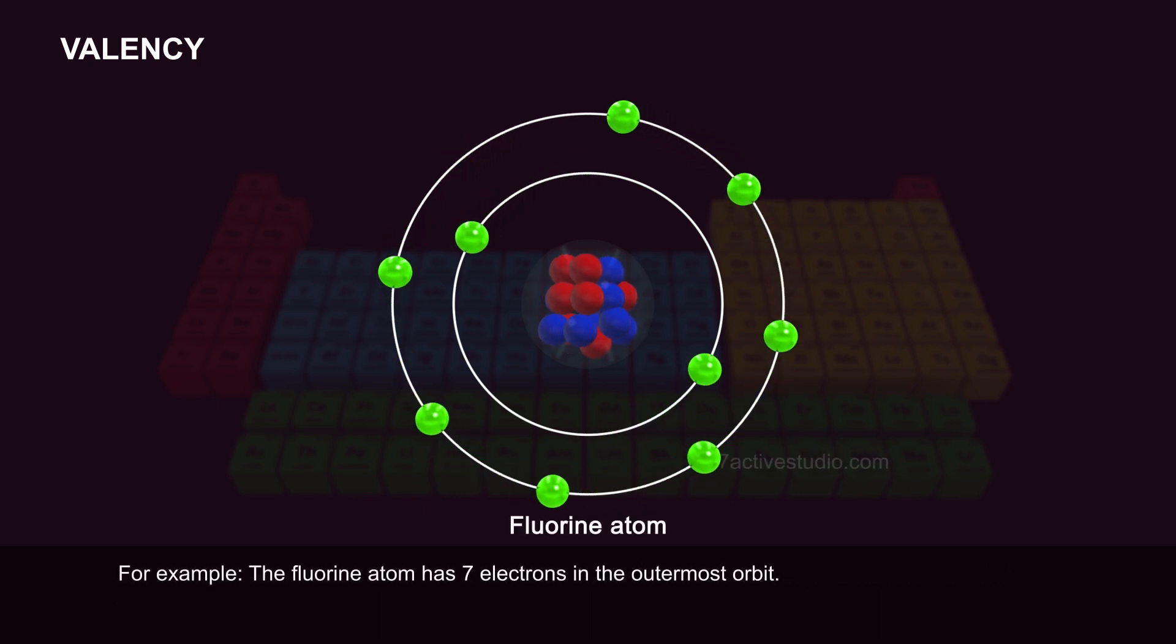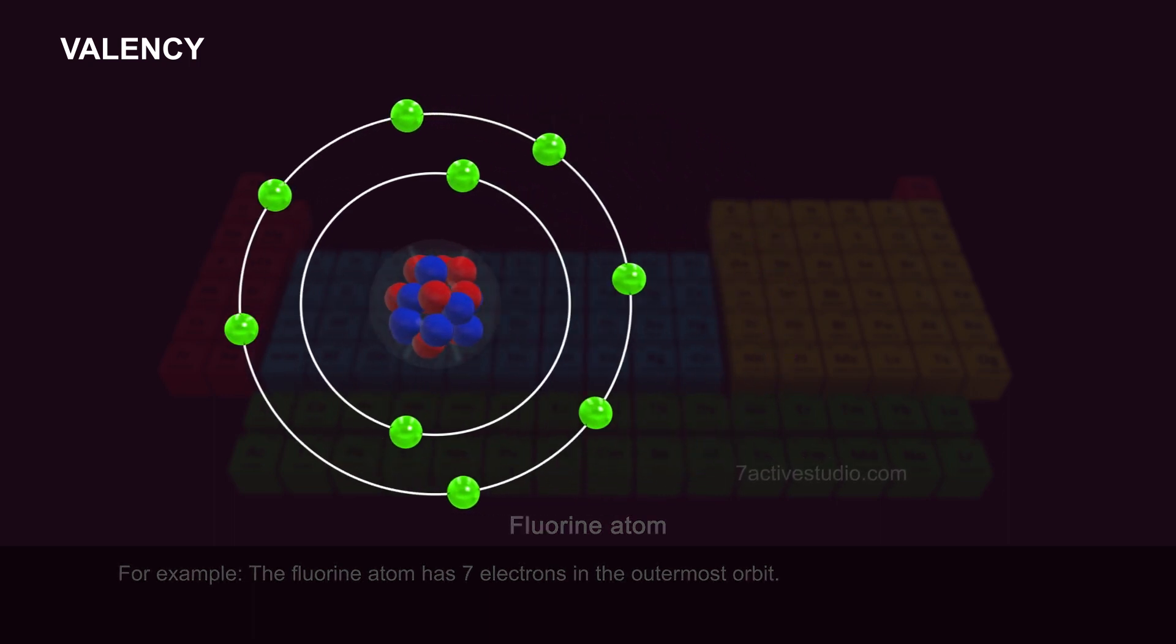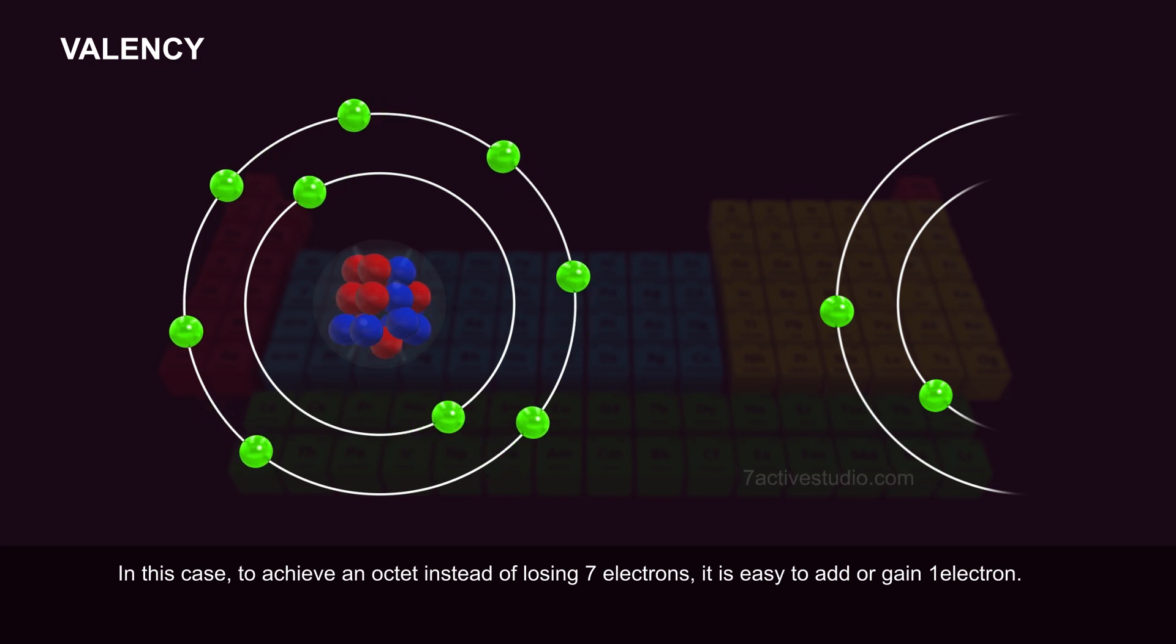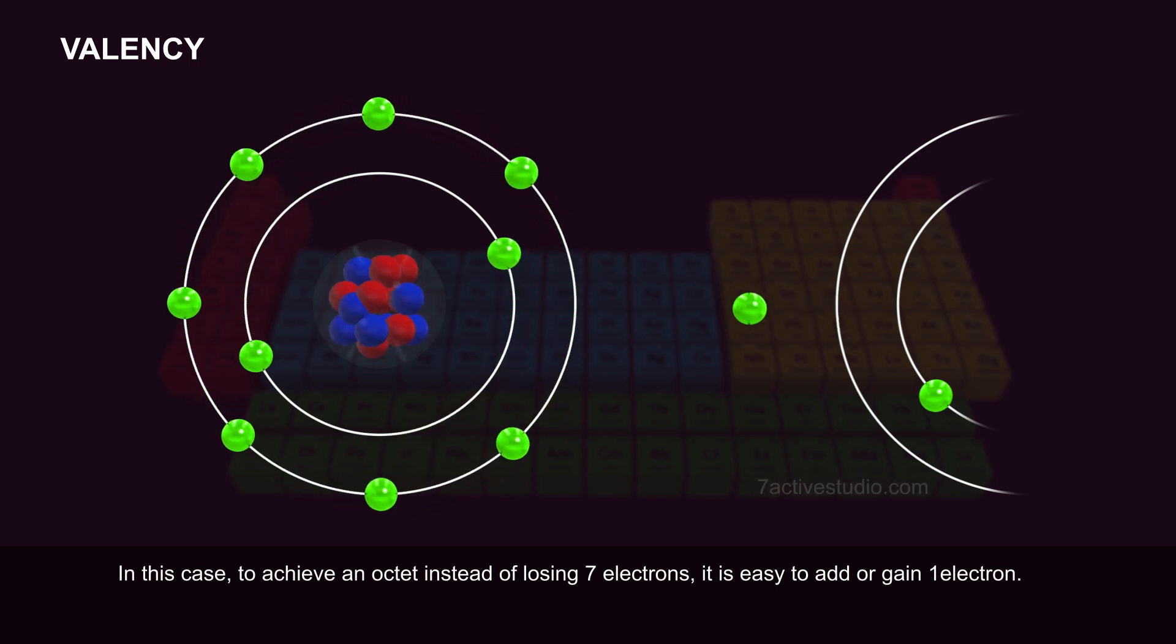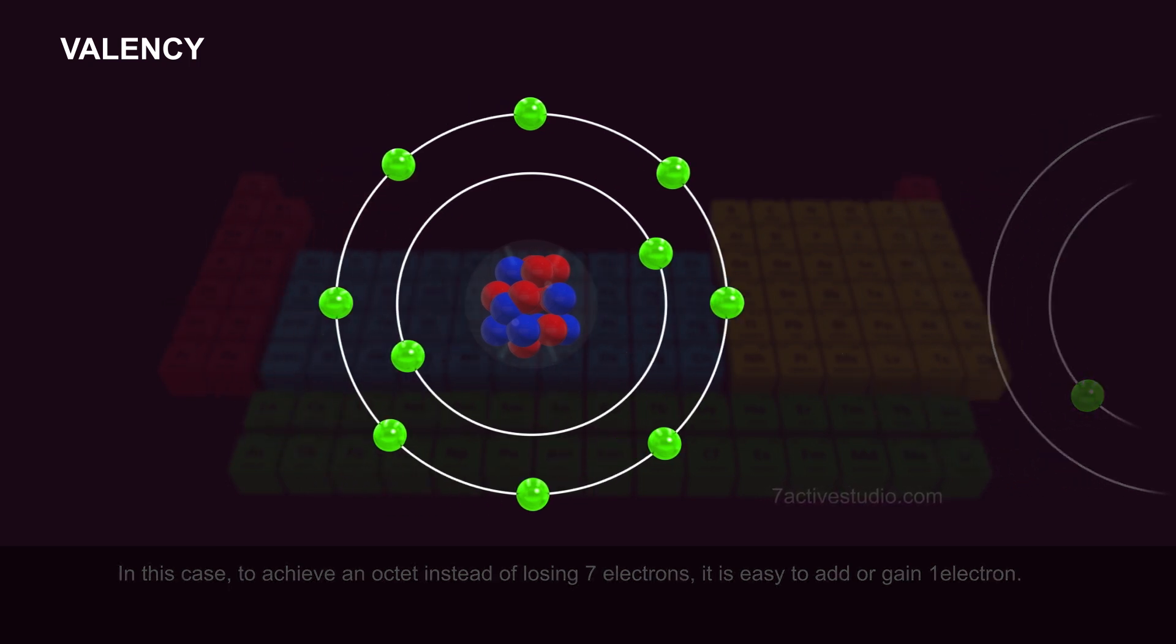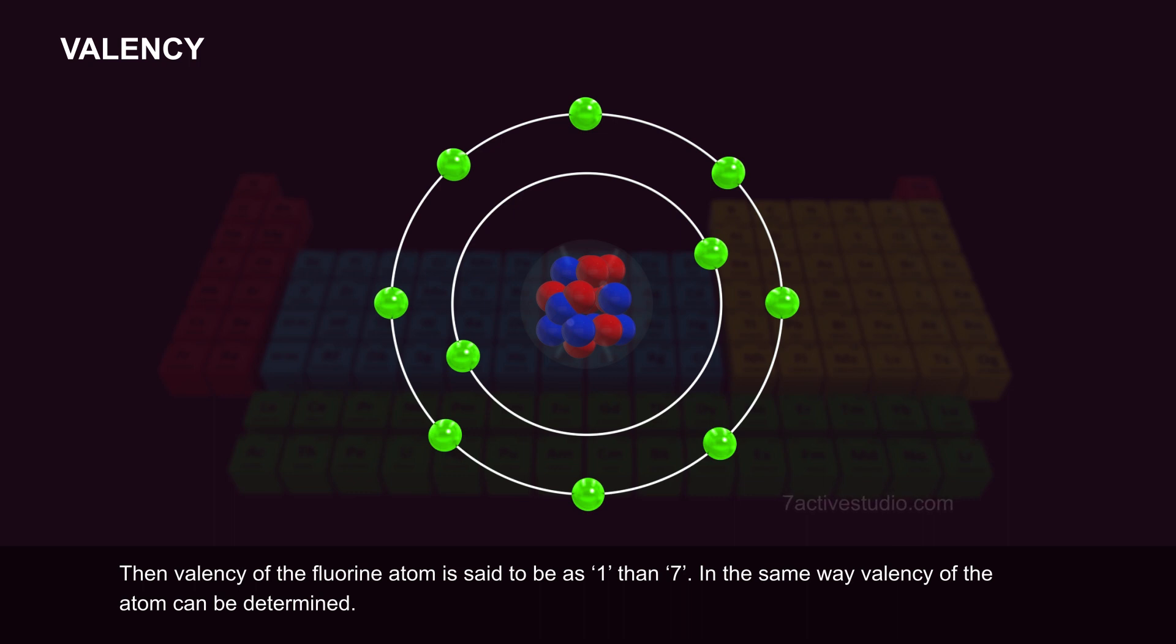For example, the fluorine atom has 7 electrons in the outermost orbit. In this case, to achieve an octet, instead of losing 7 electrons, it is easy to add or gain 1 electron. Then the valency of the fluorine atom is said to be 1 rather than 7.